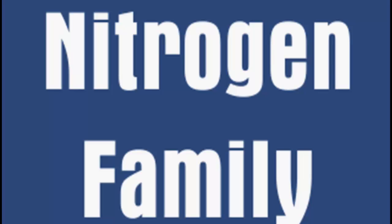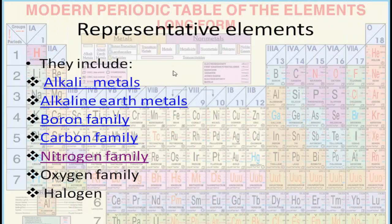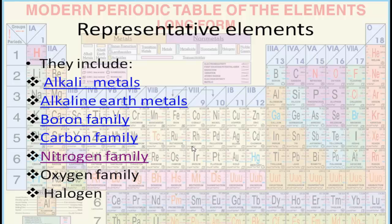Today in this session we shall discuss one of the categories of representative elements, that is the nitrogen family. As we have already discussed alkaline metals, alkaline earth metals, boron family, and carbon family, so let's understand now the nitrogen family.